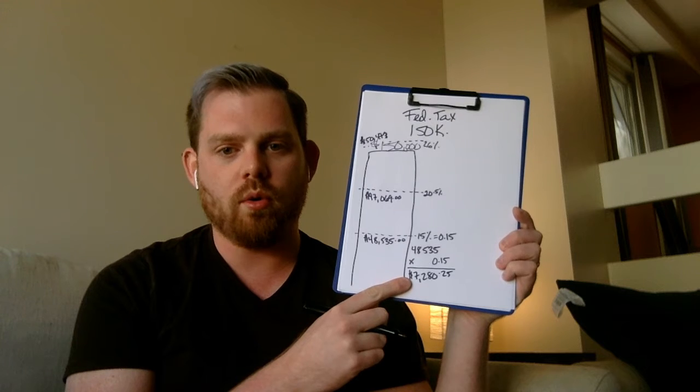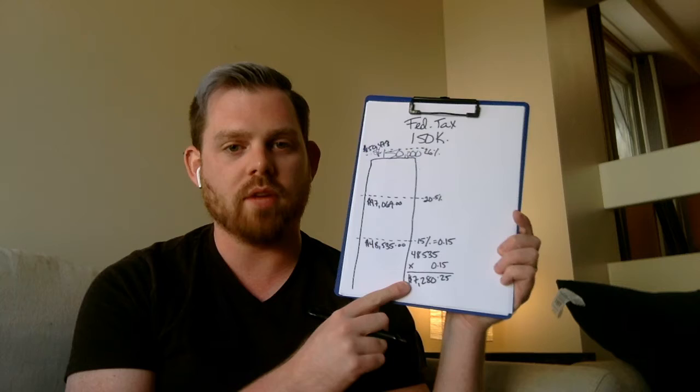The first bracket is super easy to calculate. We flip the percent into a decimal — 15% becomes 0.15, by moving the decimal two spots. Then we do $48,535 times 0.15. Using the calculator: $48,535 times 0.15 equals $7,280.25. So on the first $48,535, we are going to pay $7,280.25 in taxes. We'll put a box around that because we'll need it for the final total.